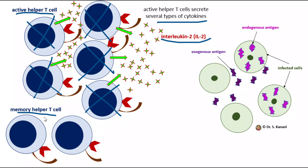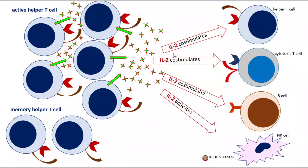Before elaborating further on memory helper T-cells, it's important to mention key effects of interleukin-2. Interleukin-2 is used as a treatment for many patients, making it a very important molecule. Interleukin-2 promotes activation and proliferation of all lymphocytes, and specifically, it is a co-stimulator for other helper T-cells, cytotoxic T-cells, and B cells.